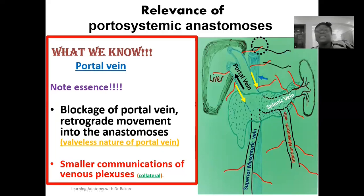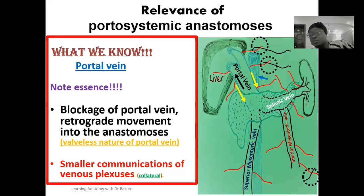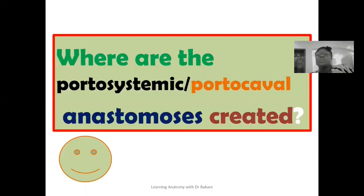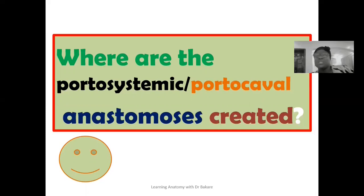At specific points within the portal venous system, anastomoses are created having a portal component and also a systemic component, so that the blood will drain backwards into the systemic component where it will be collected into the inferior or superior vena cava. The question now is: where are the portosystemic or porto-caval anastomoses created? Specific regions of the portal venous system have the creation of anastomoses, so let's see where specifically these anastomoses are created.